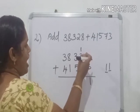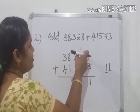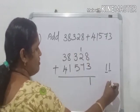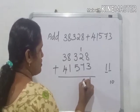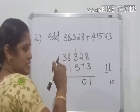Then add tens place digit. 7 plus 2 is 9, 9 plus 1 is 10. 10 also two-digit number. We have to write here 0. 1 is carryover, write in next place.